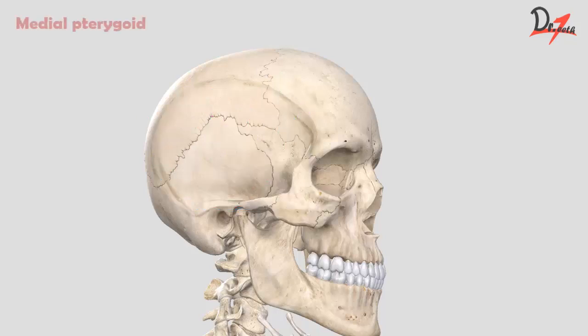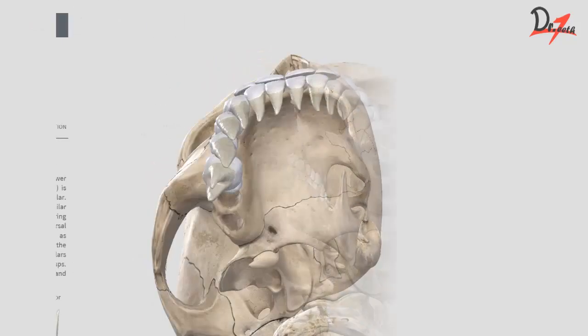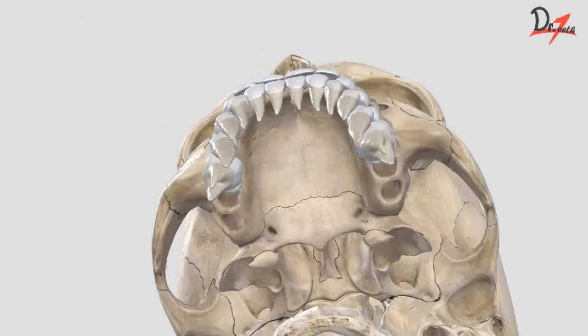Now let's move on to the medial pterygoid — it is a thick quadrilateral muscle. The superficial head originates from the maxillary tuberosity on the infratemporal surface of the maxilla. The deep head is larger and arises from the medial surface of the lateral pterygoid plate of the sphenoid bone.